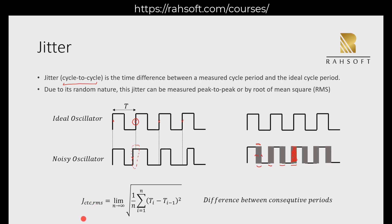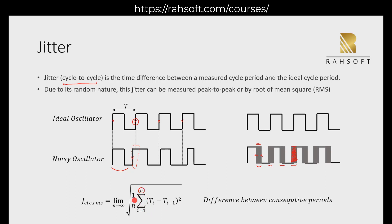How can we find this cycle-to-cycle jitter RMS value? We have to observe this for a long time — we cannot just check only one period. We have to check for a very long time and calculate it like this. N is your cycle count, for example 50 cycles or 60 cycles.